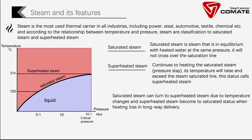These states we call superheated steam. We should know these states are not always stable. Saturated steam can transition to superheated steam due to temperature changes, and superheated steam can revert to saturated states when heat loss occurs during pipeline delivery. That is why temperature and pressure compensation are essential in a steam measurement system.